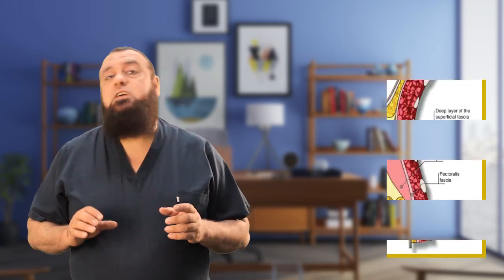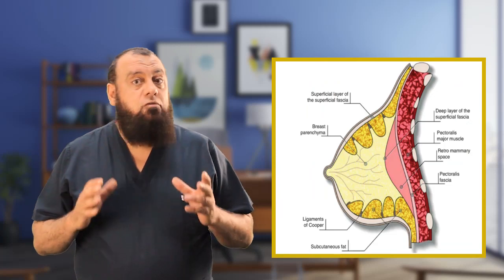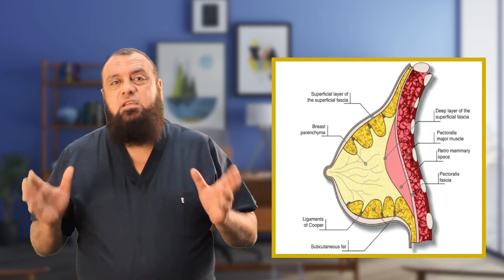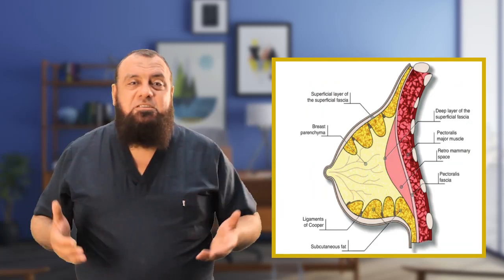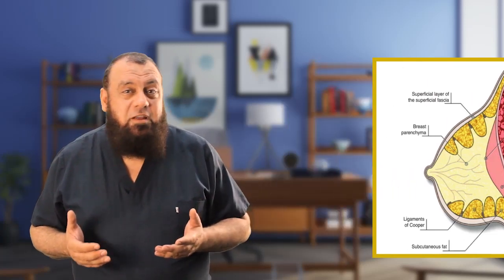Today's talk is about the breast. Starting with anatomical considerations: by definition, the breast is a modified apocrine sweat gland present within the superficial fascia of the anterior chest wall. There is no deep fascia here, which allows expansion of the breast during lactation.